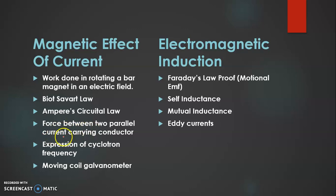Then force between two parallel current carrying conductors. Numericals can come from this. Then expression of cyclotron frequency, moving coil galvanometer. Now moving coil galvanometer I think is not very important for this year, but still just give a rough revision kind of thing.